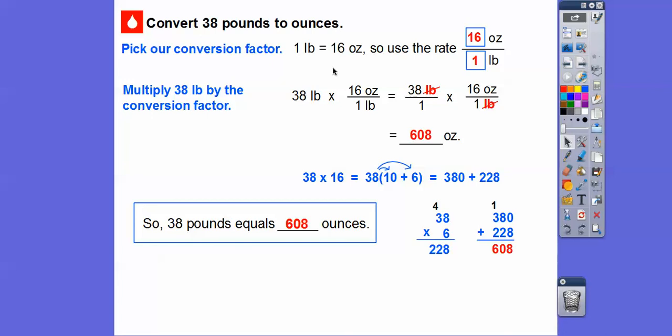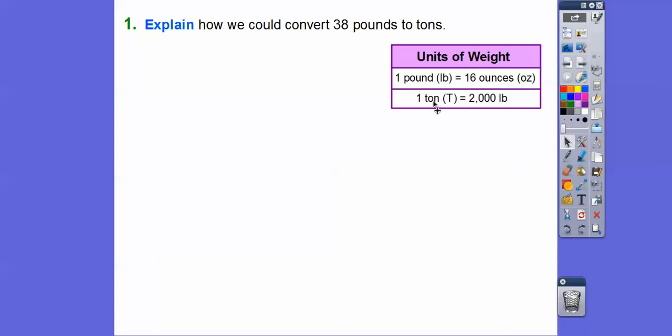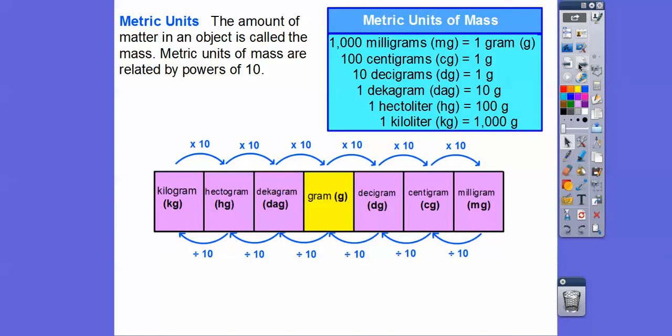Just remember, if we want the pounds to cancel, we put the pounds in the denominator with our conversion factor. So 1 pound equals 16 ounces, so the pounds has to go downstairs on this one. Explain how we can convert 38 pounds to tons. If we want pounds to get away, remember 1 ton equals 2,000 pounds, so we want the pounds to be on the bottom. We'll multiply this by 1 ton over 2,000 pounds. That way the pounds cancel, and we'll get 38 divided by 2,000.